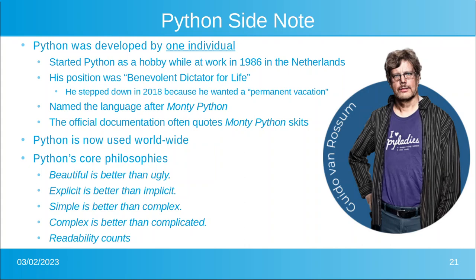I want to give you a little Python side note. Python was actually developed and invented by one guy — it's his brainchild. He started it as a hobby while working at some company in the Netherlands. He calls himself the benevolent dictator for life, but in 2018 he resigned, saying he wanted a permanent vacation. He named the language after Monty Python, and the official documentation often quotes Monty Python. Python is now used worldwide.